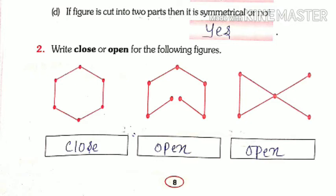We have clearly answered question number 1. Now let us see question number 2: write close or open for the following figures. Some figures are given for which we need to write open or close. The first figure has six sides, which is a hexagon, and it is completely closed. The second figure has a part in the middle that is open, so even if a small part is open, it is an open figure.